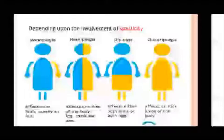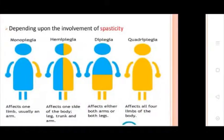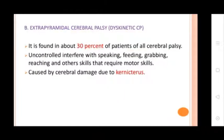Subtypes of spastic CP include: Monoplegia — affects one limb, usually an arm. Hemiplegia — affects one side of the body including the trunk and arm. Diplegia — may affect both arms or both legs. Quadriplegia — affects all four limbs of the body.